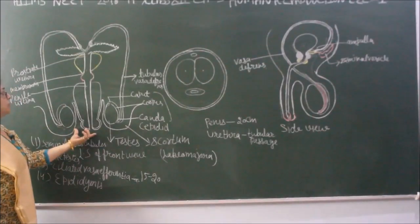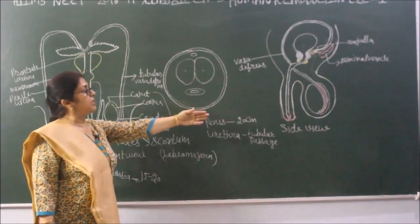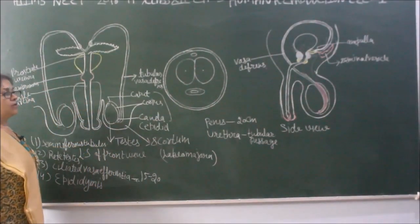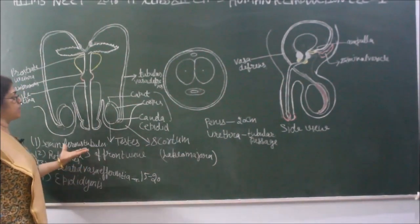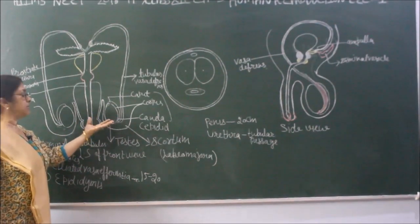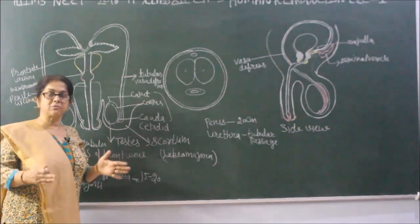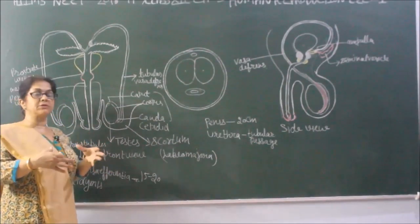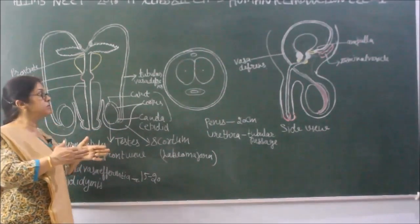This is a front view of the male reproductive system and that is a side view of the male reproductive system. Both are drawn in NCERT, which is why both parts have been illustrated. As we know, the male reproductive system is a system of ductules — the whole system is made of ducts, which is why we say there is an accessory ductule system.